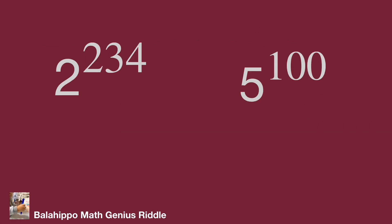These two values — 2 power of 234 and 5 power of 100. Try to compare them: which one is bigger? Review the indices of these two values. They are 234 and 100.